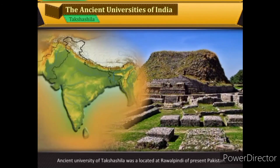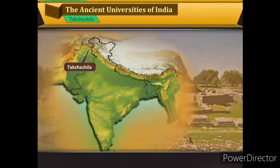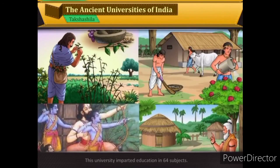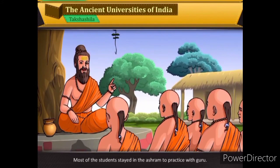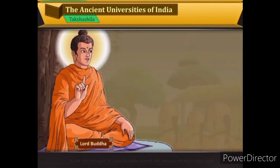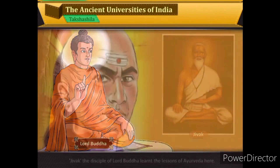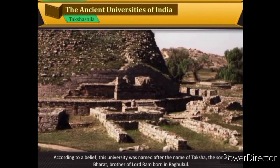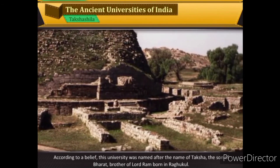The ancient University of Takshashila was located at Rawalpindi in present-day Pakistan. It was the capital city of the ancient Gandhara region. This university imparted education in 64 subjects. Most students stayed in the ashram to practice with their guru. Jivaka, the disciple of Lord Buddha, learnt the lessons of Ayurveda here. Kautilya, composer of the Arthashastra, also studied here. According to belief, this university was named after Taksha, the son of Bharata, brother of Lord Rama.